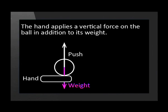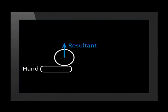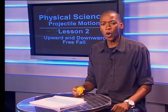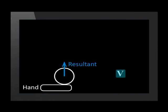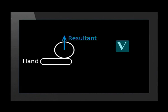This is because my hand applies a vertical force on the ball in addition to its weight. The combined effect of these two forces is called the resultant. The resultant force accelerates this ball, and since the resultant force acts upwards, it accelerates the ball upward. So the ball is both moving and accelerating upward, making it get faster and faster. Notice that the V for velocity is getting bigger as the object moves upward.